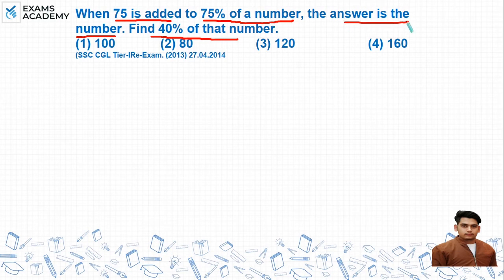So what will be 40% of that number? We'll take the number as x. If we take 75% of this number, that's 75% of x. If we add 75 to this, we'll get the number x again.